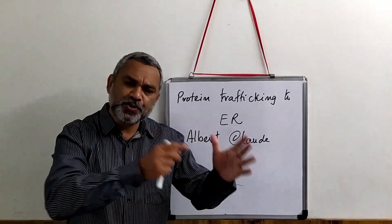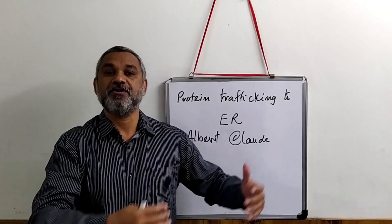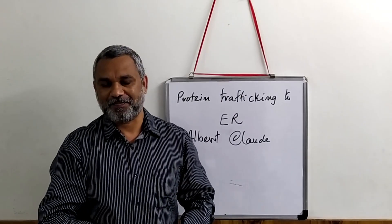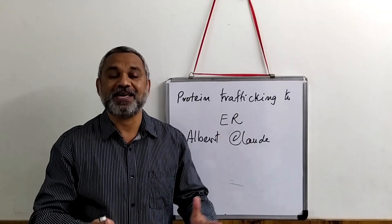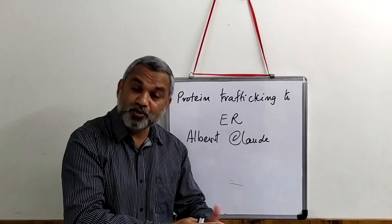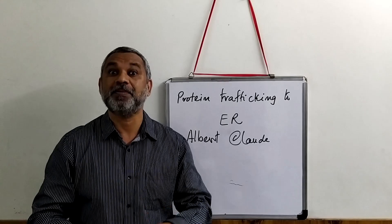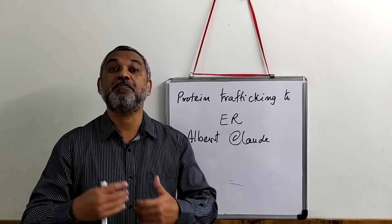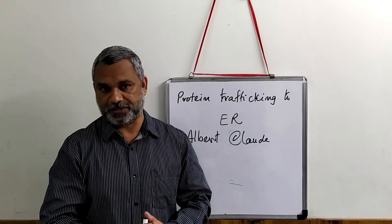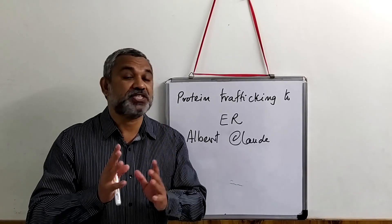The endoplasmic reticulum has its extension from the cell membrane to the nucleus. There are two portions: one is the smooth endoplasmic reticulum, and the other is the rough endoplasmic reticulum, where proteins are synthesized and ribosomes are bound.